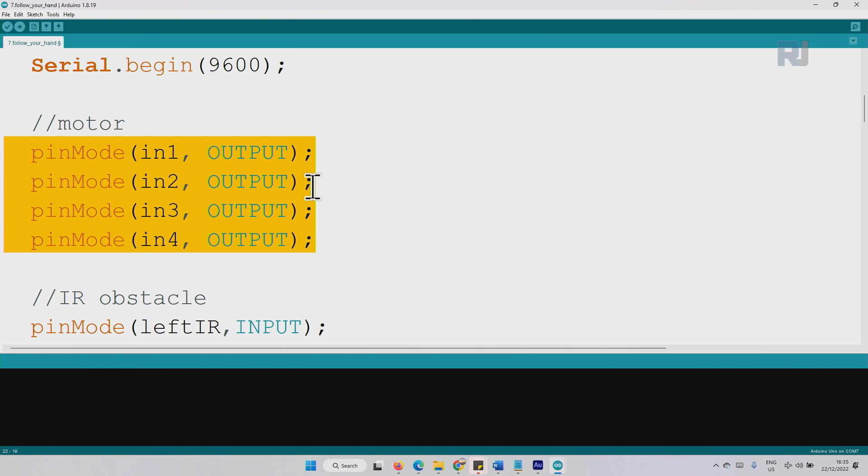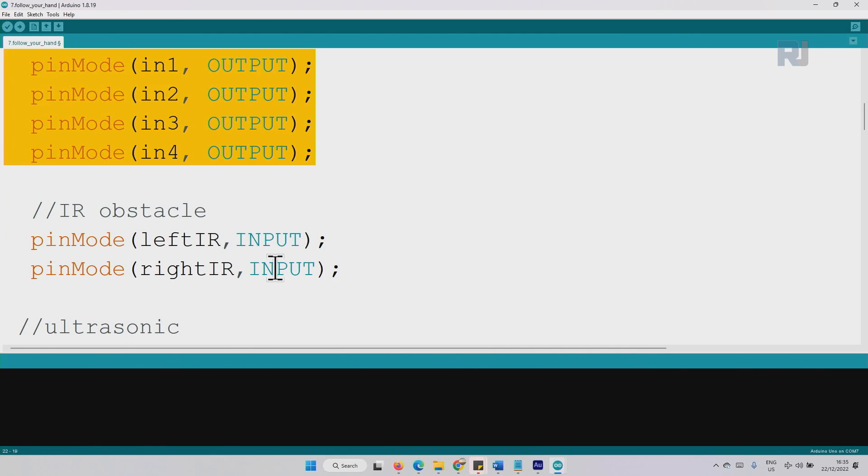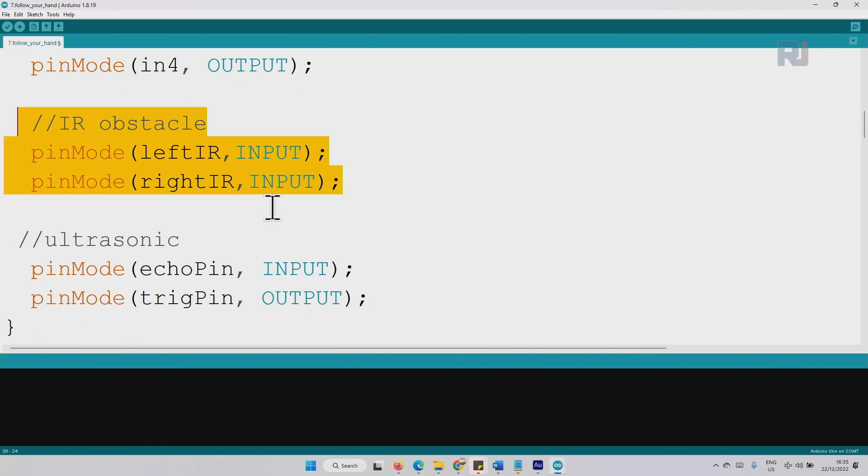We are defining the serial monitor and the pins as output for motor and these are for obstacle avoidance. This was missing: I've taken this from the code for ultrasonic sensor, so echo and ping pin, one is as input, the other is as output. They have been defined here.